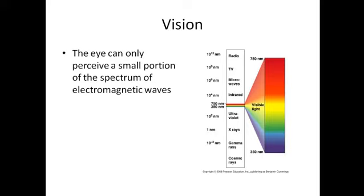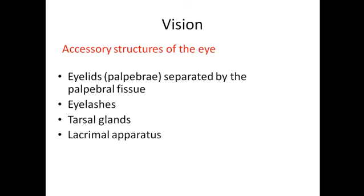The eye only sees a small proportion of the spectral electromagnetic waves, ranging from 350 to 750 nanometers. Starting with the accessory structure of the eye externally.